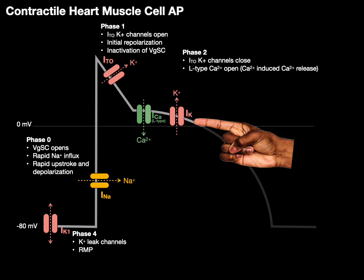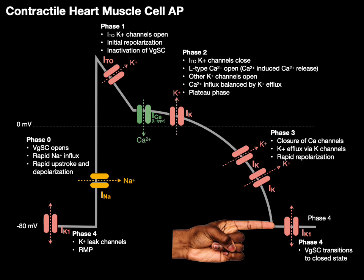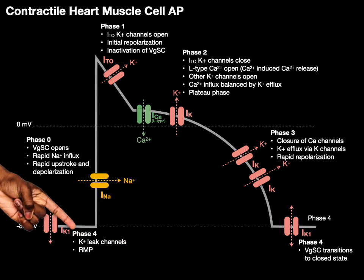Phase two: the transient outward potassium channels are closing, the L-type calcium channels open resulting in calcium-induced calcium release, and the other potassium channels are now open. Calcium influx is balanced by potassium efflux — this is the plateau phase. Phase three: the calcium channels close, potassium efflux via the potassium channels causes rapid repolarization of the membrane. Finally, phase four: the voltage-gated sodium channels transition to the closed state and we are back to the beginning. That is the action potential of contractile heart muscle cells.